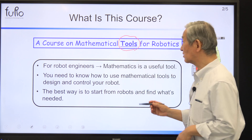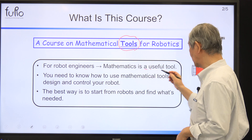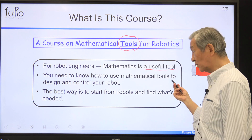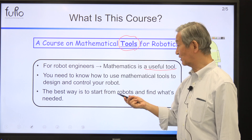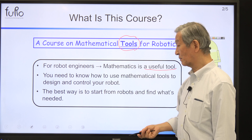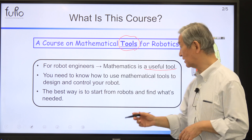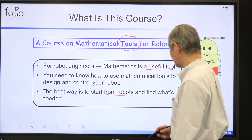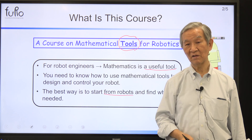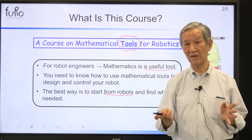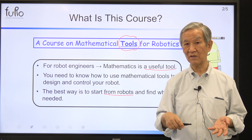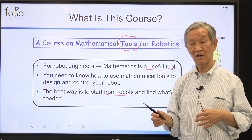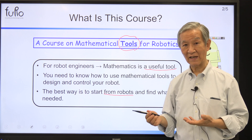So, robot engineers — mathematics is a useful tool, and you need to know how to use those mathematical tools to design and control your robot. The best way, of course, is to start from robots and find what's needed. Don't start from mathematics and apply it to robots. We start from robots and see how mathematics can help us.